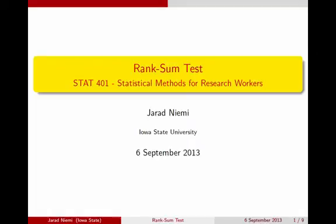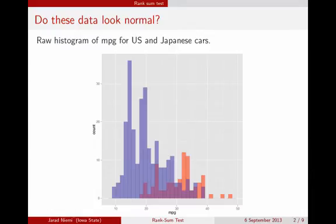Hello, this is Jared Nehemi with a mini-lecture on the rank sum test. Previously, we discussed an example using the miles per gallon for American versus Japanese cars, and we used a t-test. That t-test had an assumption of a normal distribution for each of the populations of cars. The American cars and the Japanese cars both had a normal distribution, the same variance, and possibly different means. Those are the assumptions under the t-test.